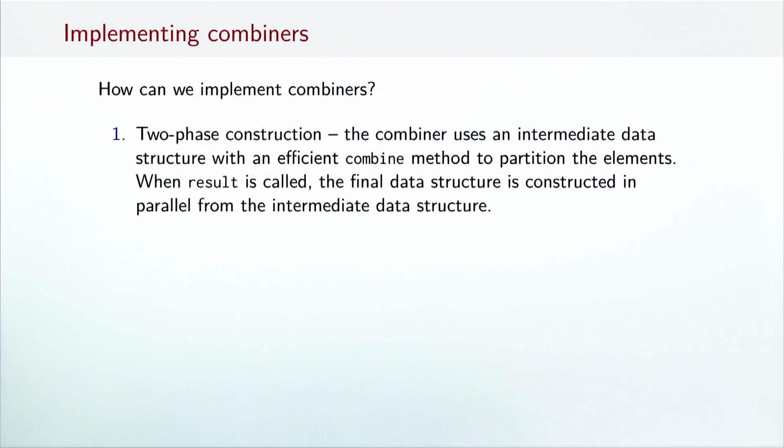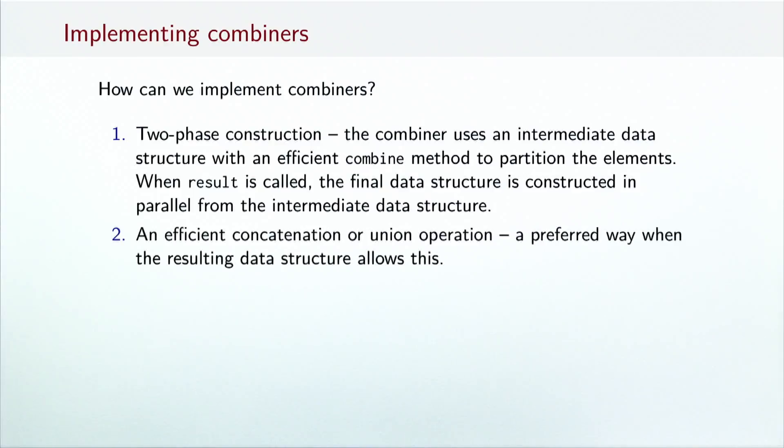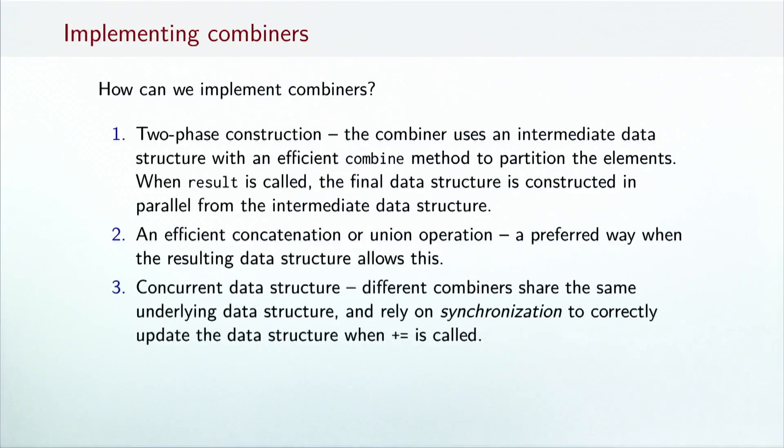Having learned about two-phase construction, we ask ourselves, are there other reasonable ways to implement combiners? The answer is yes. An alternative is to rely on a data structure with an efficient concatenation or union. Such data structures are less frequent, but they do exist. The third approach is to use a concurrent data structure. Here, combiners use the same underlying memory area, but rely on synchronization to ensure that concurrent modifications do not corrupt the data structure. In the next lecture, we will focus on the second method. We will implement a specific data structure with efficient concatenation, which is more suited for parallel computations.